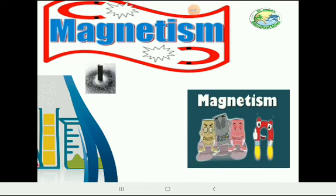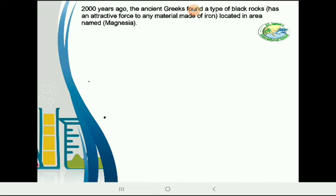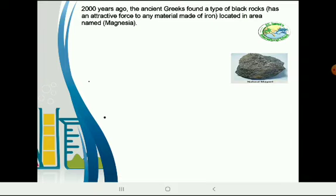Magnetism has a story going back 2000 years. The ancient Greeks found a type of black rock that has an attractive force to any material made of iron. It was located in an area named Magnesia, and that's why this black rock was named a magnet.